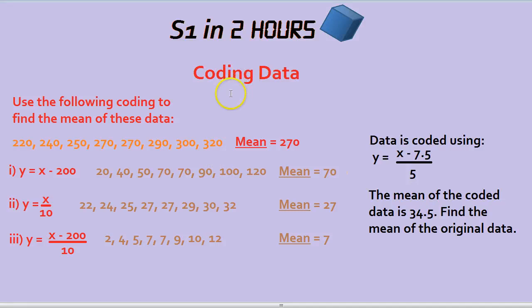Coding data in S1 can seem really complicated, but it's not. If you look at this data set here, from 220 to 320, we can see that the mean is 270.